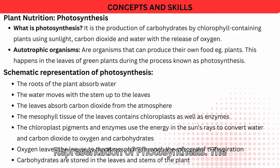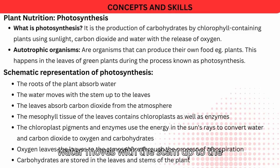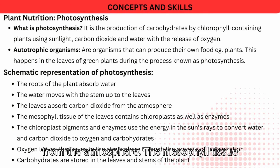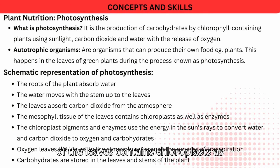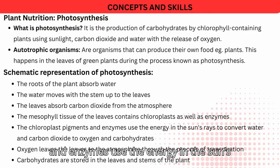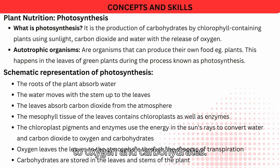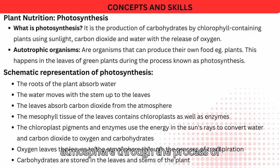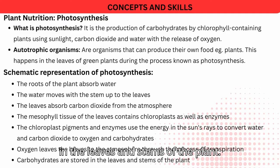Schematic representation of photosynthesis: the roots of the plant absorb water, which moves up the stem to the leaves. The leaves absorb carbon dioxide from the atmosphere. The mesophyll tissue of the leaves contains chloroplasts as well as enzymes. The chloroplast pigments and enzymes use the energy in the sun's rays to convert water and carbon dioxide to oxygen and carbohydrates. Oxygen leaves through transpiration and carbohydrates are stored in the leaves and stems of the plant.